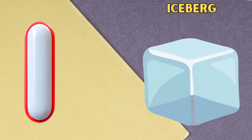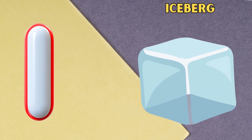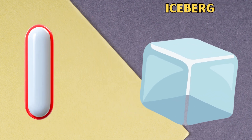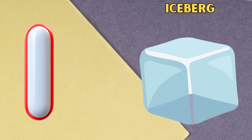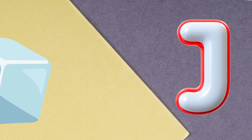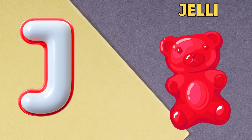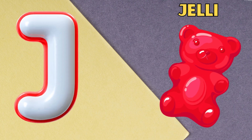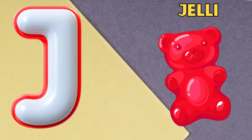I is for iceberg, i, iceberg. J is for jelly, j, jelly.